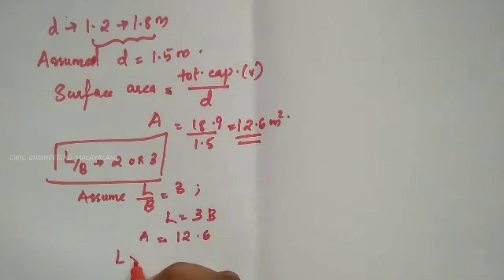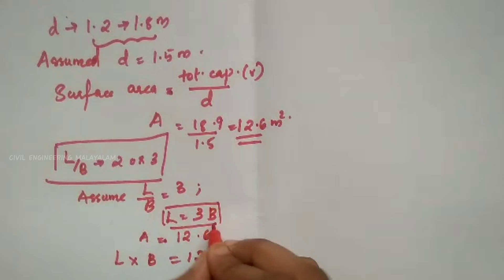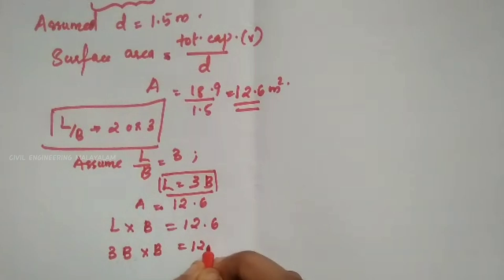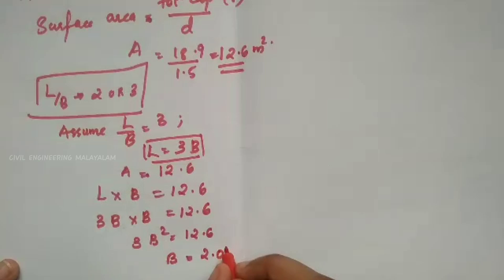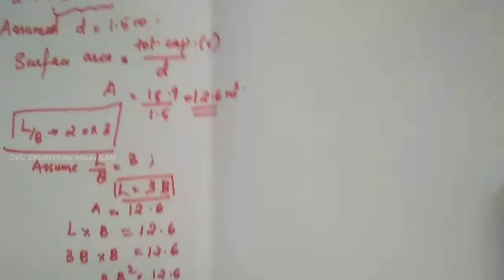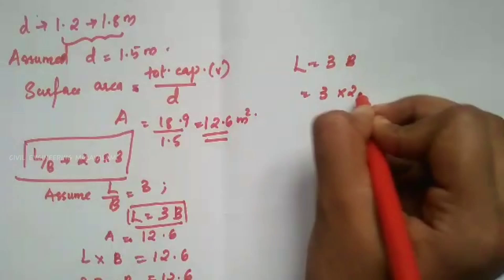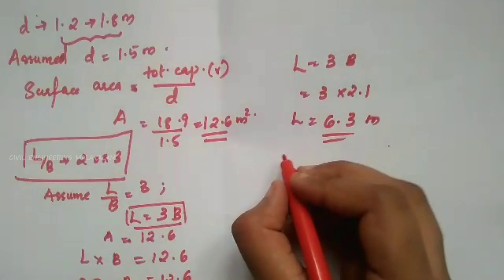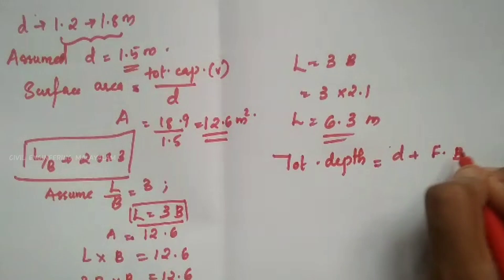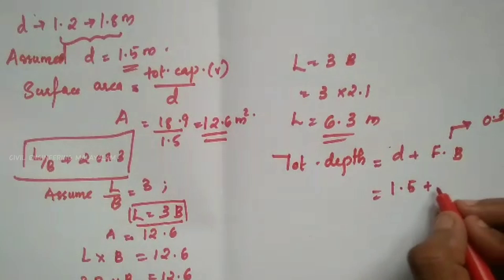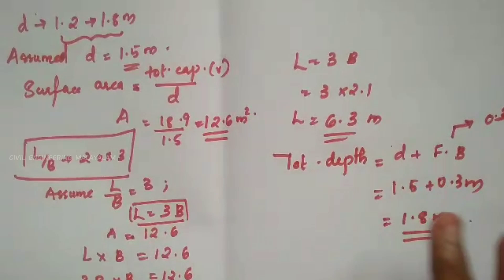The surface area is 12.6 m². Assuming length equals twice the breadth, the length works out to 6.3 metres. The total depth is assumed as 1.5 metres.